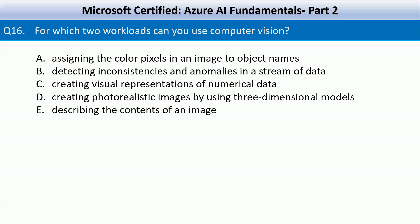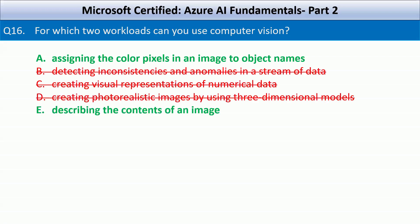Assigning color pixels in an image to object names refers to image segmentation, a core capability of computer vision involving classifying each pixel based on the object it belongs to. Detecting anomalies in data relates to data analytics, not computer vision. Creating visual representations of numerical data is data visualization. Creating photorealistic images from 3D models is computer graphics. Describing the contents of an image — image captioning or object detection — is the second correct answer, giving us options A and E.